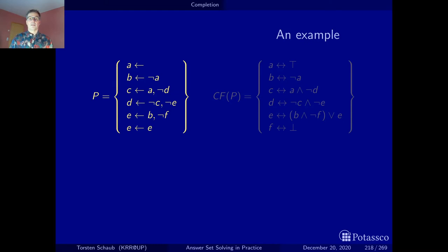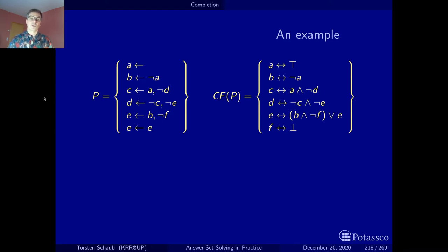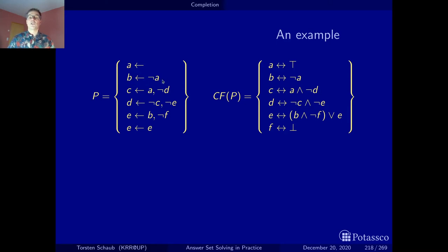We have six rules and we also get six equivalences, but this is by chance — completion works atom by atom, not rule by rule. For atom A, there is only one rule; the body is an empty conjunction, whose neutral element is true, so A is equivalent to true — which makes sense because A is a fact. For B, there is a single rule 'B if not A,' so B is equivalent to not A. Since A is true, B must therefore be false.